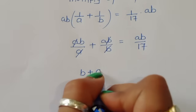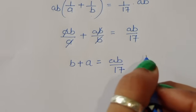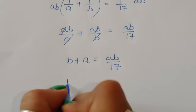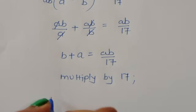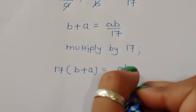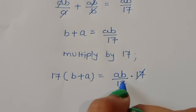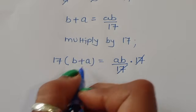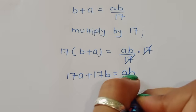Now a cancels from ab/a and b cancels from ab/b, so the left-hand side becomes b + a = ab/17. To remove the 17, we multiply both sides by 17, giving us 17 × (b + a) = ab. So 17a + 17b = ab.